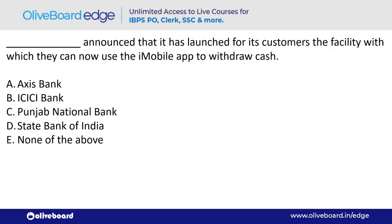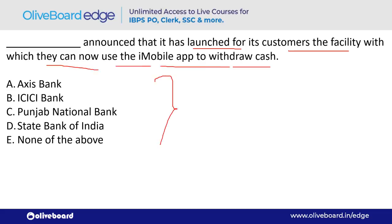Which bank announced that its customers can use the iMobile app to withdraw cash? The answer is ICICI Bank — option B. ICICI Bank's headquarter is in Mumbai.